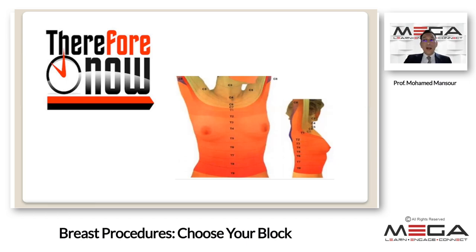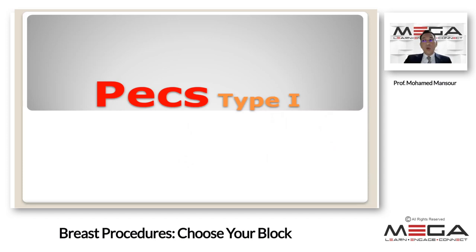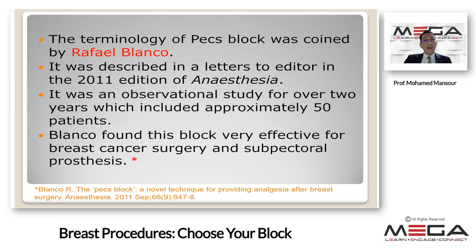The pectoral block is technically simple and depends on placing local anesthesia between the thoracic muscles. Pectoral nerve block type 1, or PECS-1, was introduced as an easy and reliable superficial block targeting the lateral and medial pectoral nerves at an interfascial plane between the pectoralis major and minor muscles. The terminology was first defined by Rafael Blanco, described as a letter to an editor in the 2011 Filanzesthesia Journal as an observational study of approximately 50 patients.